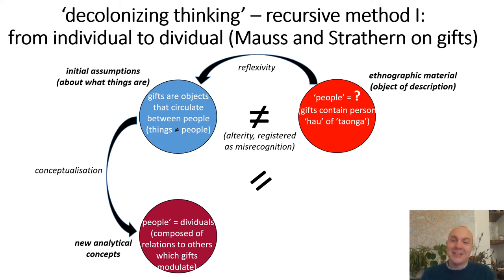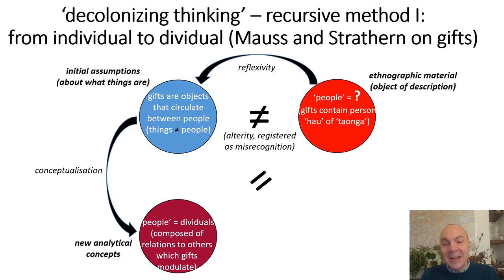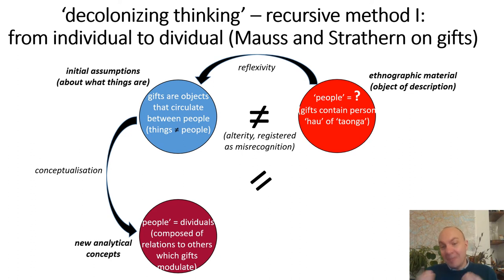Because of this relational co-constitution of people, we can't really call people 'individuals' anymore, since people divide themselves through constituting themselves in relation to others — I enter into many relations and I'm the composite of all of them. So Strathern says we should call people 'dividuals' rather than 'individuals.' This neologism is really indicative of what's going on here — Strathern is effectively having to invent a new language because the language previously available to her was inadequate.